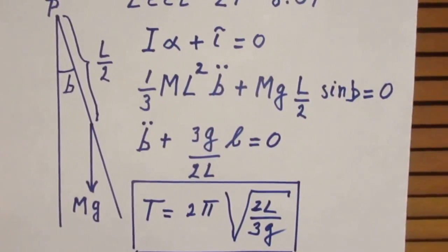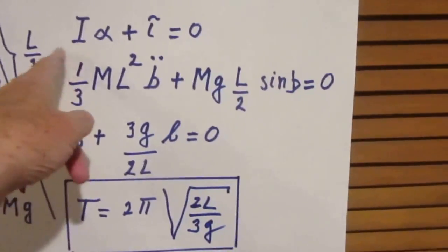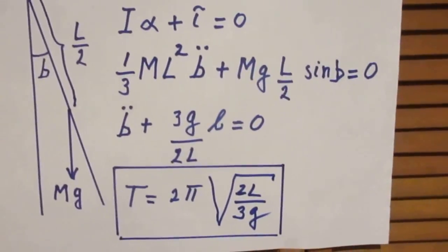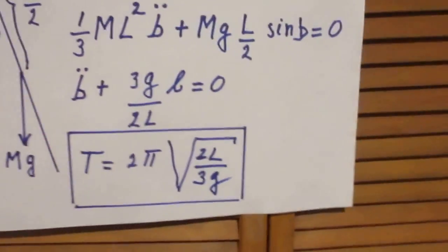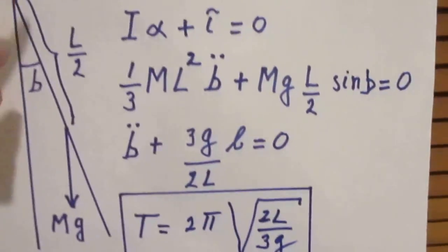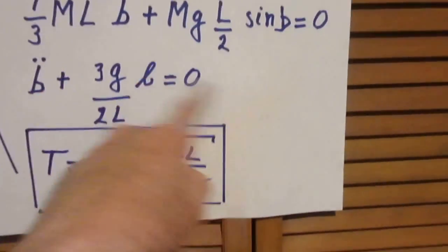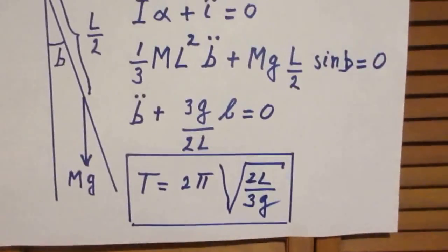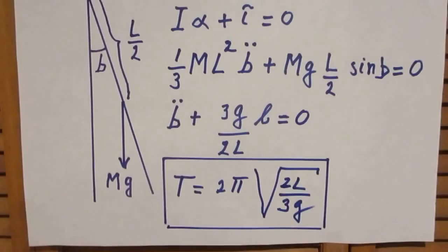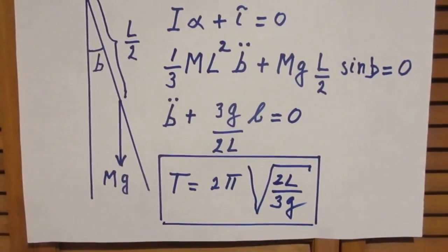I have here moment of inertia, angular acceleration, torque all about point P, and then I get a differential equation of which the solution is a simple harmonic oscillation.